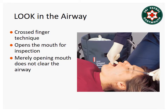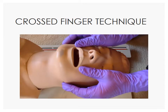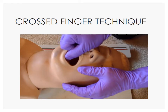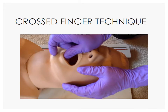Look in the airway. After opening the airway with the jaw thrust or head tilt chin lift maneuver, we also need to open the mouth and look inside. We're looking for fluids like blood or vomitus, or snow or foreign bodies. To open the mouth, use a crossed finger technique. Using your thumb and index finger, or your thumb and middle finger, use the crossed finger technique to open the mouth so that you can see into the mouth and airway.